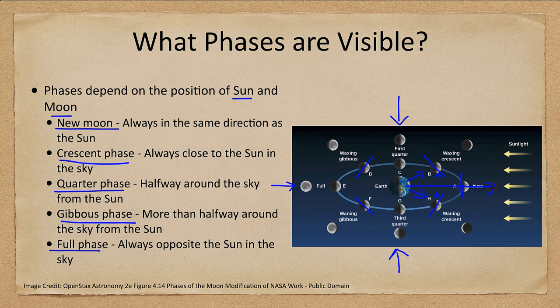What phase you're seeing can be determined by what side is illuminated. If you see a quarter-phase moon and don't know what time it is, you can figure it out: if the right side is illuminated, that's first quarter; if the left side, that's third quarter. For waning phases it's always the left side illuminated, and for waxing phases it's always the right-hand side that is illuminated.